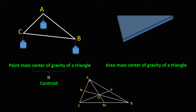The median is a line which connects each vertex to the midpoint of the opposite side. For example, M is midpoint of BC, and AM is the median that comes from vertex A. From simple geometry we can show that medians are concurrent — they intersect at one point — and this point is actually the center of gravity of both of these scenarios. Now in this video I'm going to show this to you.